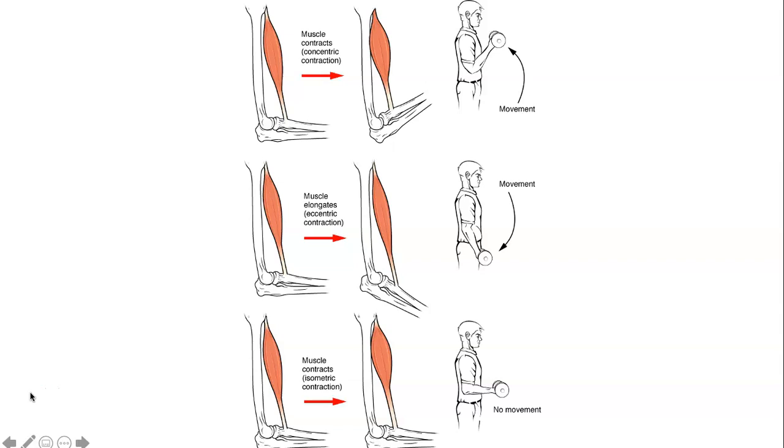To move weight, the sarcomeres have to shorten. The force that's generated by that is called muscle tension. Muscle tension is also generated even when you can't move the load you're pushing against.